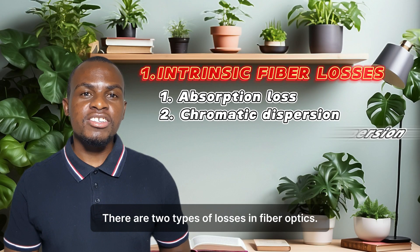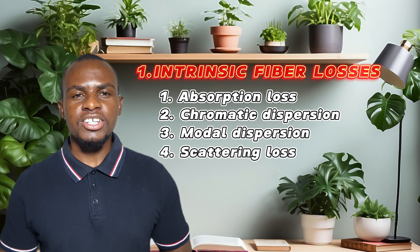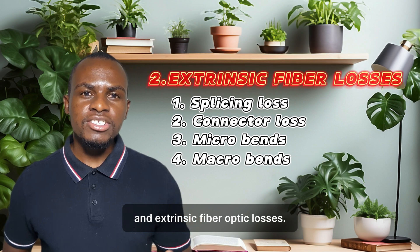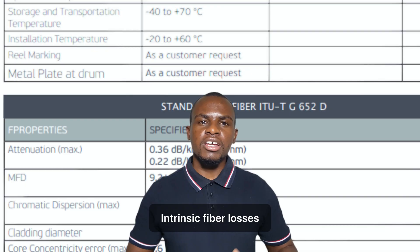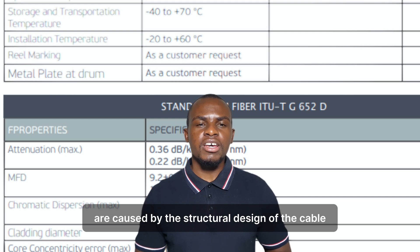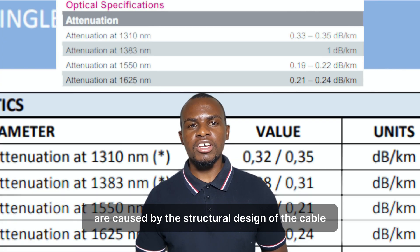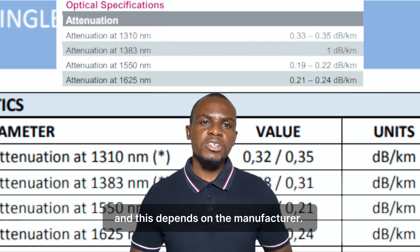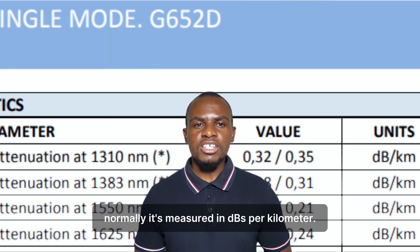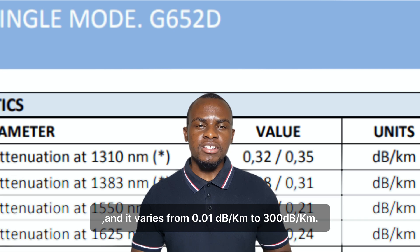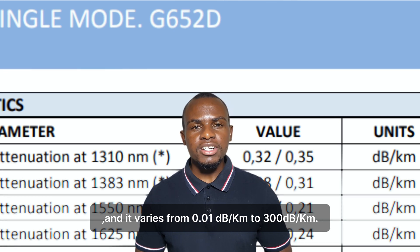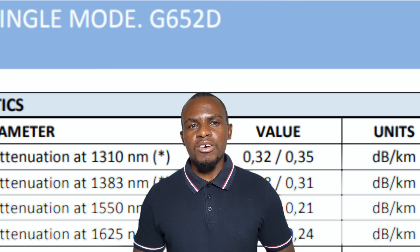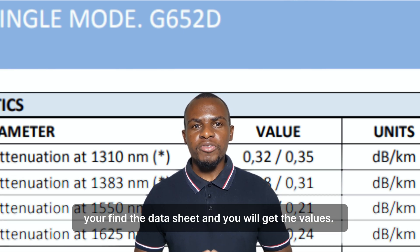There are two types of losses in fiber optics: intrinsic optical fiber losses and extrinsic fiber optic losses. Intrinsic fiber losses are caused by the structural design of the cable, and this depends on the manufacturer. Normally, it's measured in dBs per kilometer, and it varies from 0.01 to 300 dBs per kilometer. When you purchase the cable, you'll find the datasheet and you'll get the values.